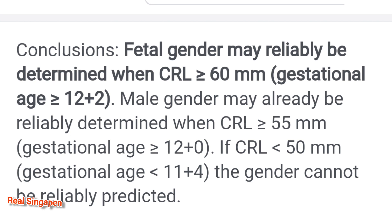First, CRL — what is the definition? CRL is Crown-Rump Length. The top to bottom measurement is the CRL value.